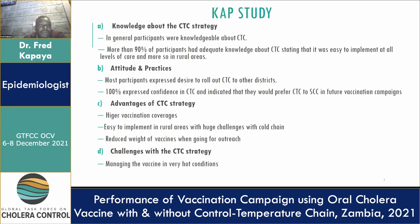Regarding the CAP survey, on knowledge about the CTC strategy, more than 90% of participants had adequate knowledge about CTC, stating it was easier to implement and could be used at all levels of care, especially in rural areas. On attitudes and practices, 100% of participants expressed confidence in CTC and indicated they would prefer CTC to the standard cold chain in future vaccinations. Advantages cited included higher vaccination coverage, easier implementation in rural areas with cold chain challenges, and reduced weight of vaccine carriers for outreach services.